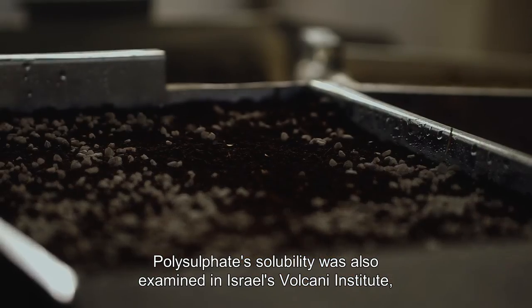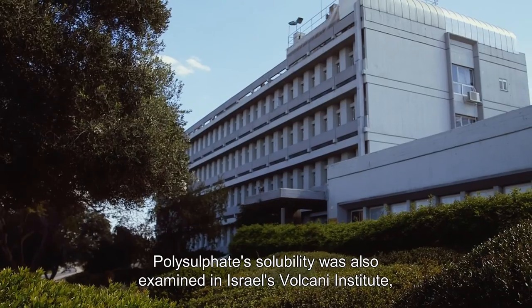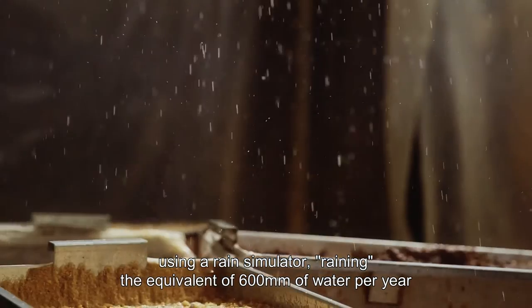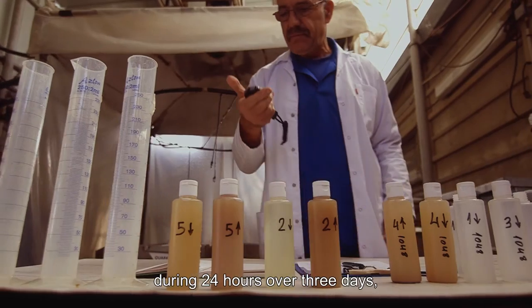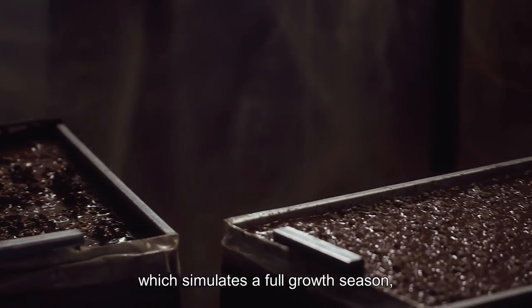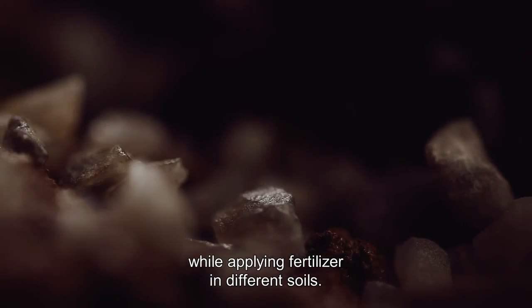Polysulfate's solubility was also examined in Israel's Volcani Institute, using a rain simulator, raining the equivalent of 600 millimeters of water per year during 24 hours over three days, which simulates a full growth season while applying fertilizer in different soils.